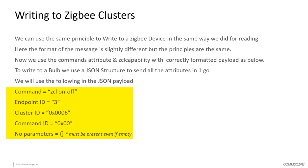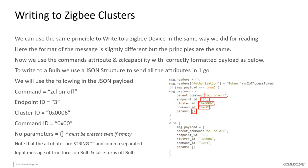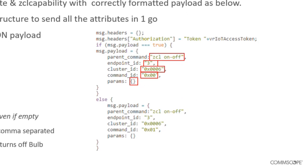We also need a command ID, which is unique to that specific command, and if there are any parameters we need to provide those as well — for example, what value to go to and how long it takes to get there. To structure the payload correctly we need to gather: the parent command, the endpoint ID, the cluster ID, the command ID, and any specific parameters needed for that command.